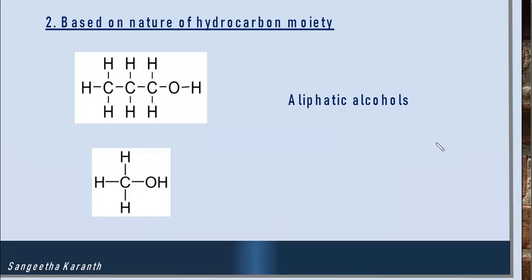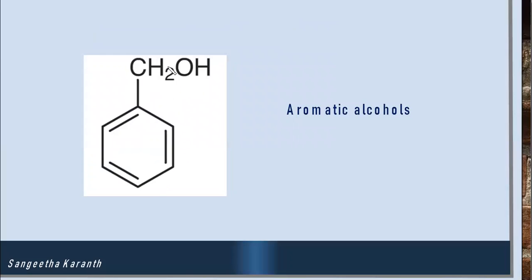Another method of classification of alcohols is based on the nature of the hydrocarbon moiety. If the moiety attached to the OH group is completely alkyl in nature, we call it an aliphatic alcohol — common examples are methanol, ethanol, propanol, etc. If the moiety contains a phenyl ring attached to the alkyl group, we call such alcohols aromatic alcohols; the example is benzyl alcohol.